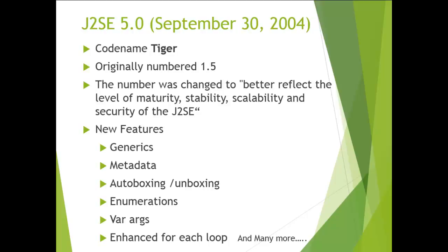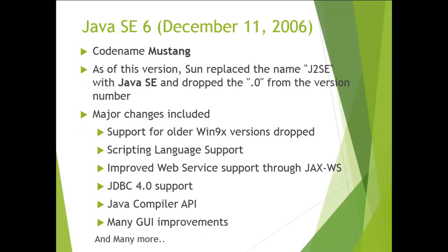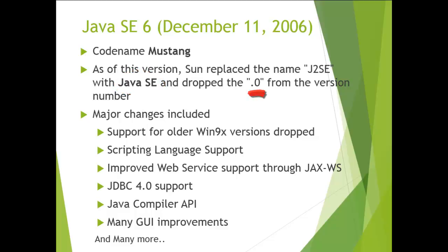The next version is Java Standard Edition 6, released on 11th December 2006, with the code name 'Mustang'. As of this version, the name J2SE was replaced with Java Standard Edition (Java SE), and the '.0' was dropped from the version number. After this, all versions are named Java SE 6, Java SE 7, and so on.